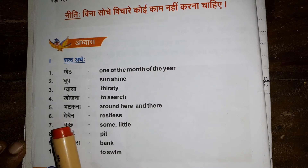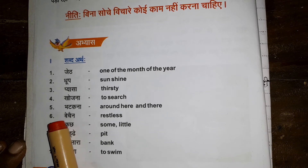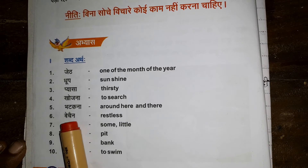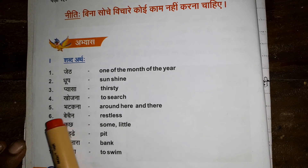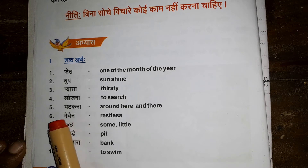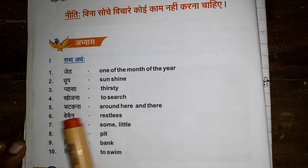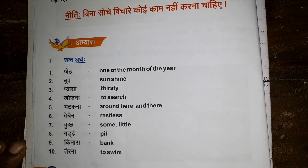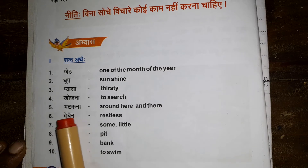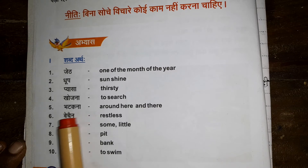Next: Bechain. Be is separate, then Chain. These two are short letters. Bechain means restless. If there is a symbol, you have to read it as it is — Be, Chai, Na — Chain. Bechain means restless.